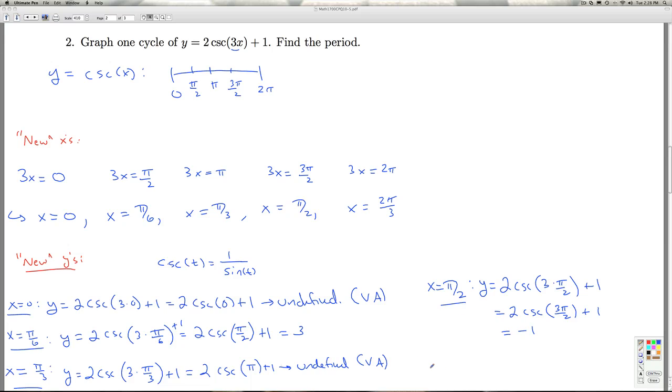To round it out, for x = 2π/3, I get y = 2csc(3·2π/3) + 1, which is 2csc(2π) + 1. This is undefined. So I've got an asymptote at 0, 3 at π/6, an asymptote at π/3, -1 at π/2, and another asymptote at 2π/3.